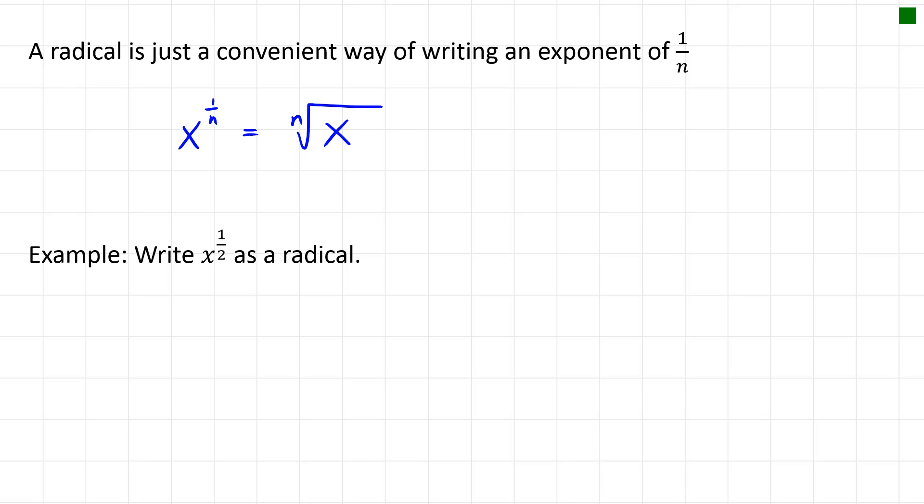If we have x to the power of 1/2, we can write that as a radical by writing x to the power of 1/2 equals the square root of x. And I'm not going to write the 2 here in that index spot because I don't have to do that for square roots.